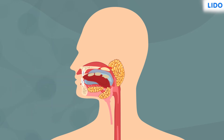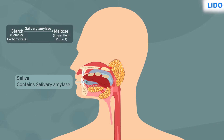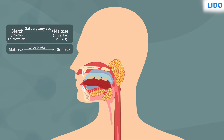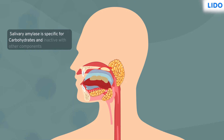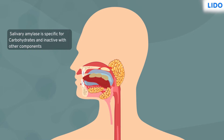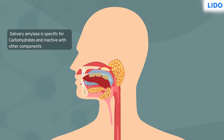In our mouth, saliva has an enzyme called salivary amylase that partly breaks the complex carbohydrates such as starch to maltose. Maltose is just an intermittent stage — it still has to be converted to glucose. Also, salivary amylase is inactive on any other component such as proteins or lipids, and they remain undigested.